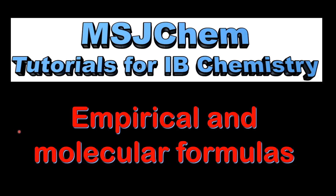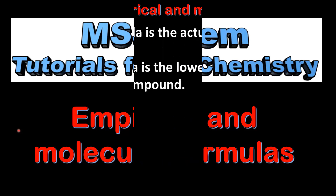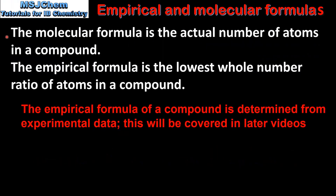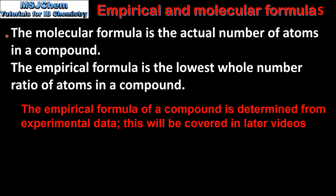This is MSJChem. In this video I will be looking at Empirical and Molecular Formulas. Let's start the video with a couple of definitions. The molecular formula is the actual number of atoms in a compound, and the empirical formula is the lowest whole number ratio of atoms in a compound.